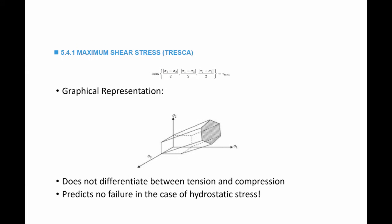In 3D, this maximum shear stress criterion is represented by the shown shape. It's a hexagon surrounding the line sigma 1 equals sigma 2 equals sigma 3. Any point on the surface represents the onset of failure.